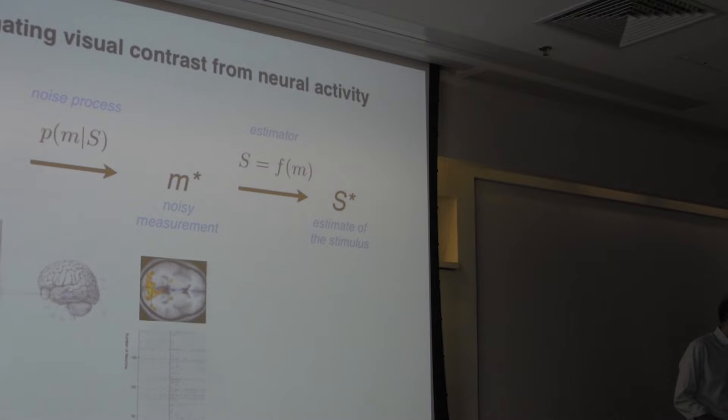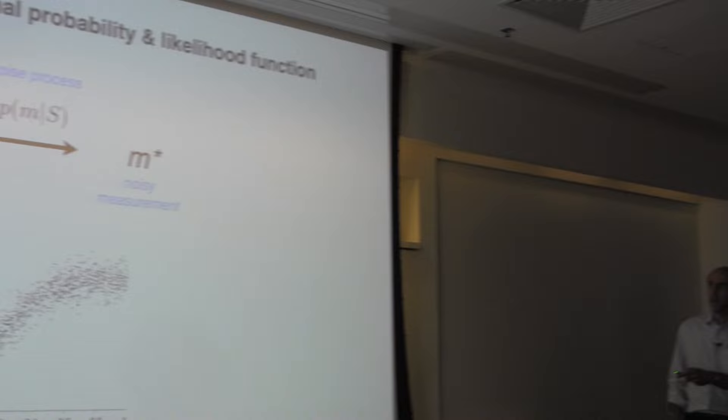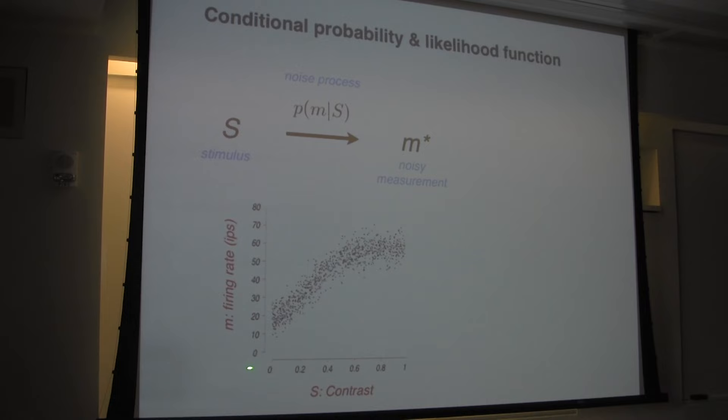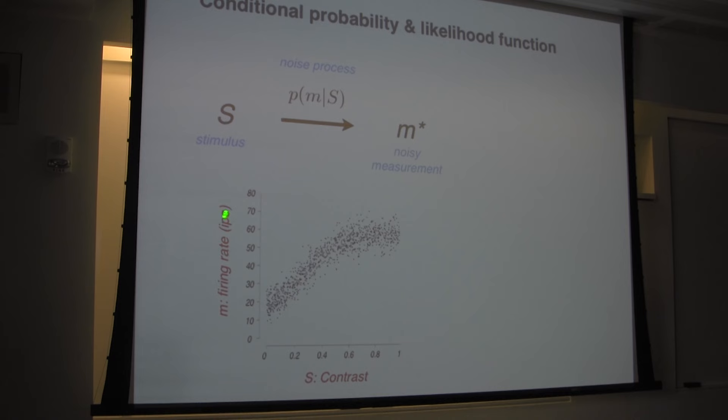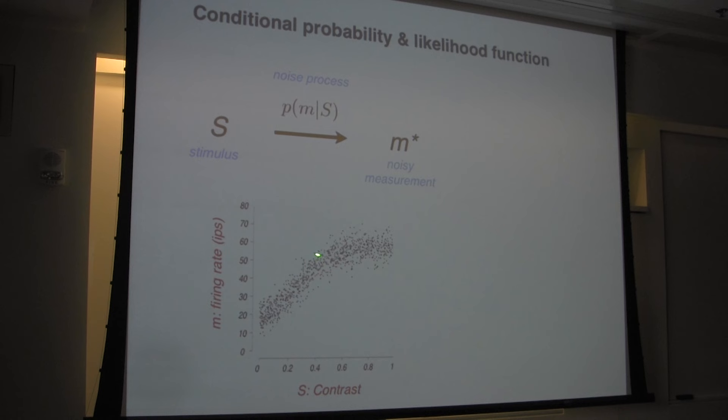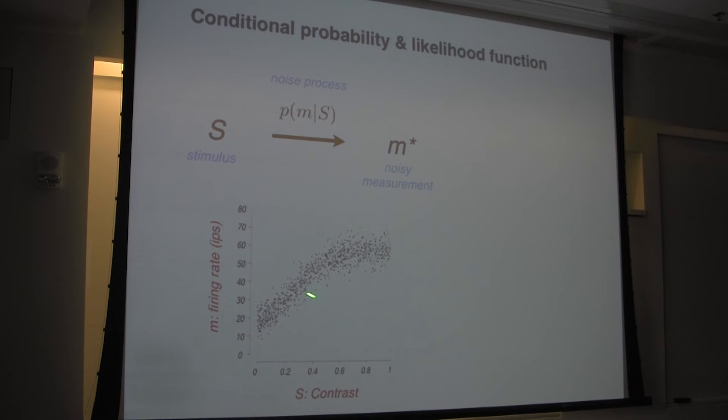The Bayesian estimator is one among many other estimators you may want to use to make inferences. Let's start from something simple. Think about one neuron in the primary visual cortex. As an experimenter, I control the contrast of the stimulus S, and on many, many trials I measure the firing rate of that one neuron. You see there's variability for the same exact contrast — sometimes the neuron fires a little bit more, sometimes a little bit less. Any measurement device will have some noise.